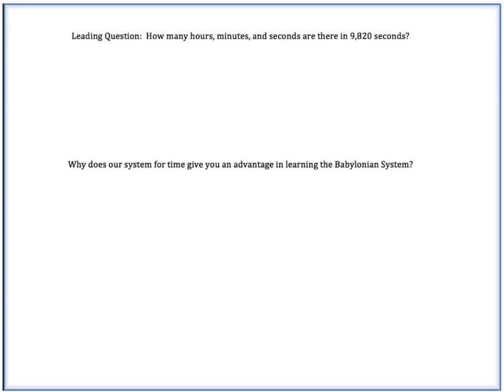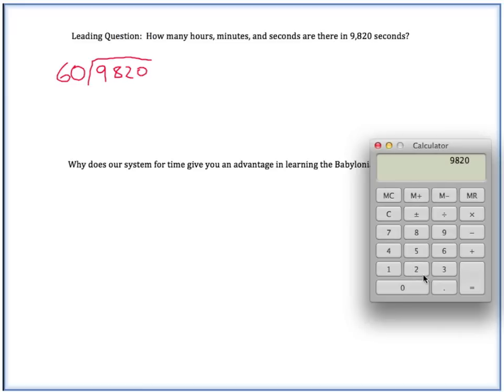Now here's a question for you. How many hours, minutes, and seconds are there in 9,820 seconds? Well, let's see. If we have 9,820 seconds, we could divide this by 60 and figure out how many minutes there were. So 9,820 divided by 60. So there's 163 minutes, plus a certain amount of seconds left. If we want to figure out how many seconds were left, we would have to find the remainder here.